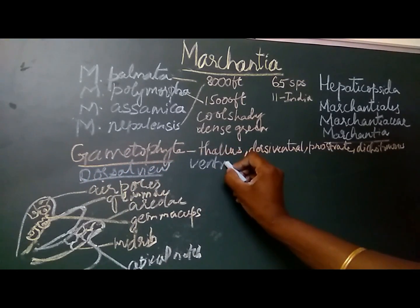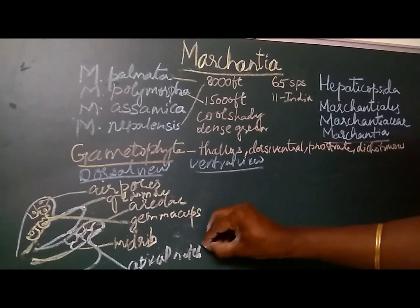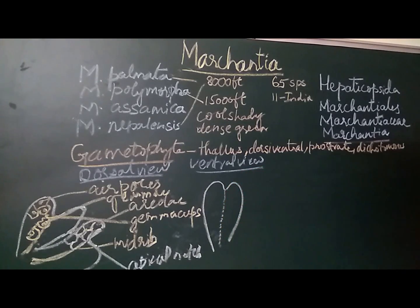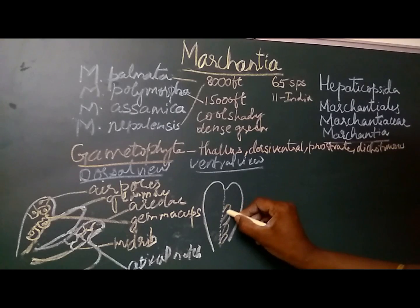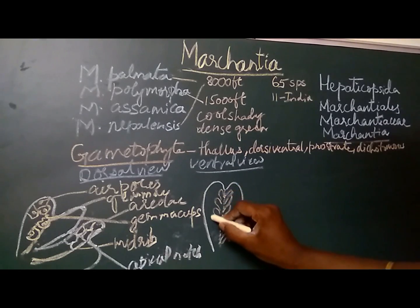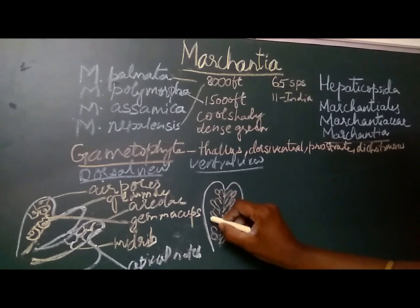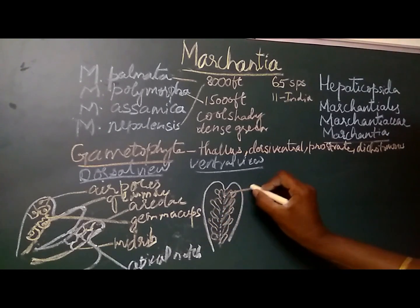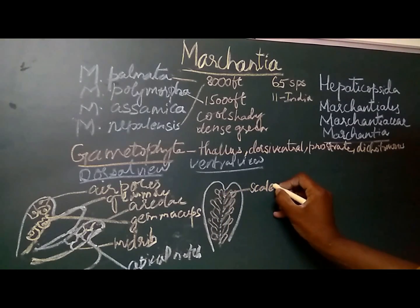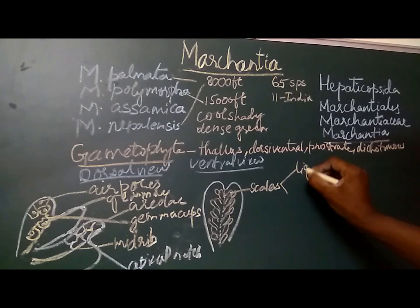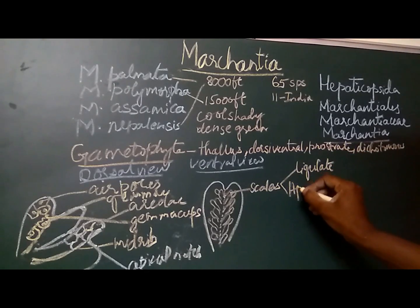Now let us see the ventral surface. When we turn the thallus to the ventral surface, in the center of the thallus we find a ridge-like structure which corresponds to the midrib of the dorsal region. On either side of this midrib, there are small membranous structures called scales. The scales of Marchantia are arranged at an angle of 45 degrees and appear in two rows on either side. In certain species of Marchantia, there are three to four rows of scales present.